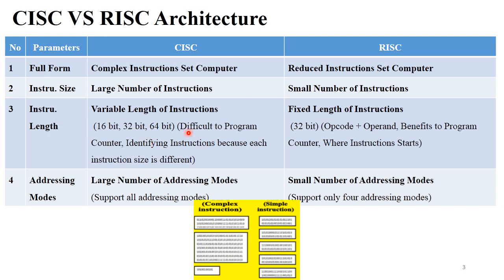The next point is addressing modes. In the previous session we discussed different addressing modes like direct, indirect, sequential, and index sequential addressing modes — different addressing modes used to fetch data from memory. CISC architecture supports a large number of addressing modes, meaning it supports all addressing modes present in that particular processor architecture. But in RISC architecture, only a small number of addressing modes are supported, such as direct or indirect addressing modes.